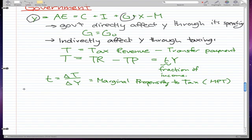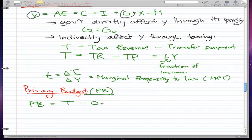Now I'm going to talk about the primary budget, or PB. Primary budget equals T minus G. We can expand T to make it TR - TP - G, or tax revenue minus transfer payments minus government spending.